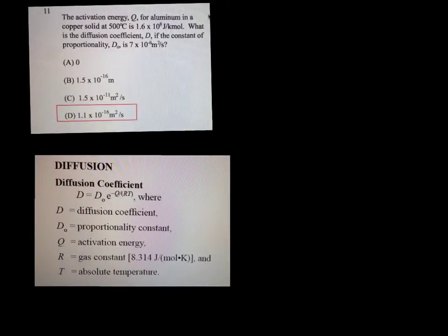So let's go ahead and do the math on this one. We're trying to compute D. We know it's equal to 7 times 10⁻⁶ meters squared per second multiplied by e to the minus 1.6 times 10⁸ joules per kilomole.